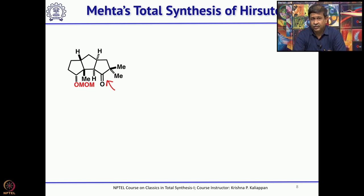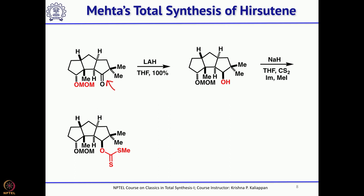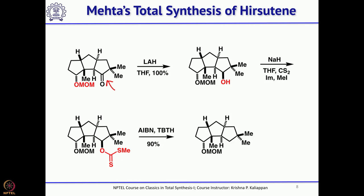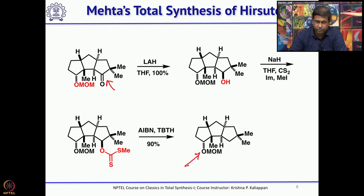He chose a three-step protocol to remove the remaining carbonyl group: reduce the ketone with LAH to get the alcohol, then convert that alcohol into a xanthate by treating with sodium hydride, carbon disulfide, and methyl iodide, to get the corresponding xanthate. That xanthate was treated with tributyltin hydride and AIBN to remove the oxygen. The right-hand side 5-membered ring is fine, the middle 5-membered ring is fine, and now he had to remove the protecting group, oxidize the alcohol, and do the Wittig to complete the total synthesis.